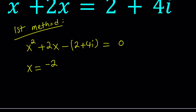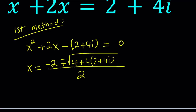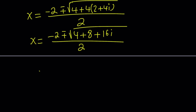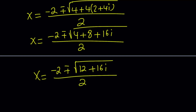So we get negative b plus or minus the square root of b squared, which is 4, minus 4 times a, times c. c has a negative sign, so the double negative makes it positive, and we just multiply 2 plus 4i by 4, then divide by 2a which is 2. Distributing inside the radical: 4 plus 8 plus 16i gives us 12 plus 16i, all divided by 2.